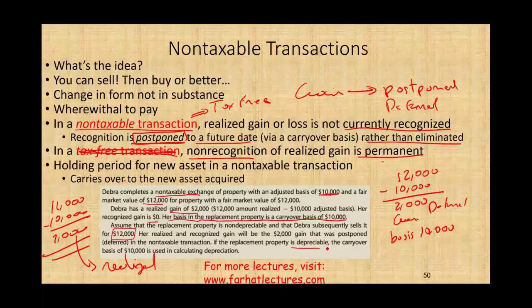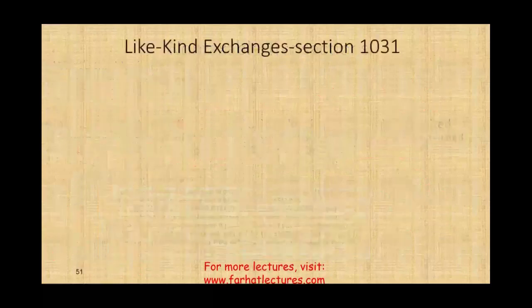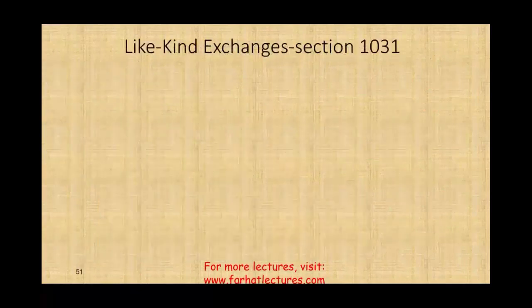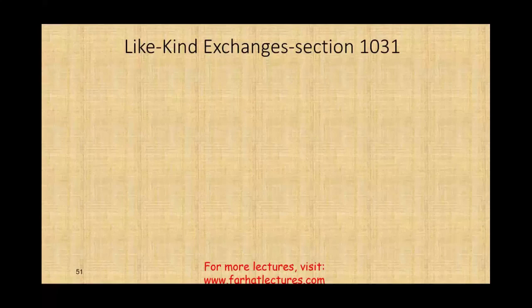If the replacement property is depreciable, the carryover basis of $10,000 is used in calculating depreciation. Now we will be more specific and talk about like-kind exchanges, which are covered under Section 1031. Section 1031 covers like-kind exchanges — exchanging one asset into a similar asset.